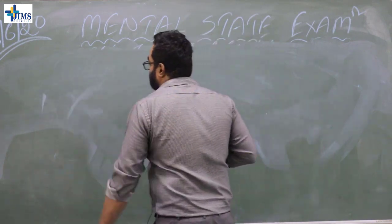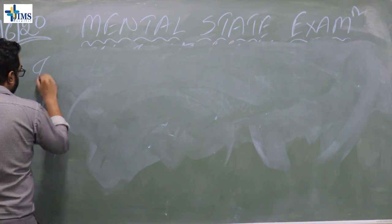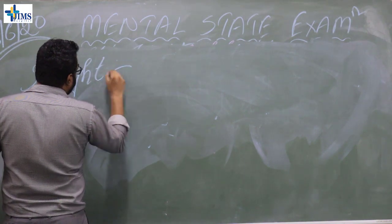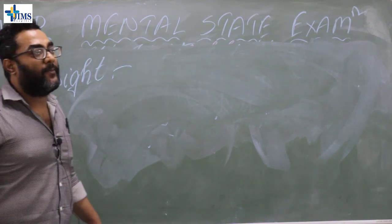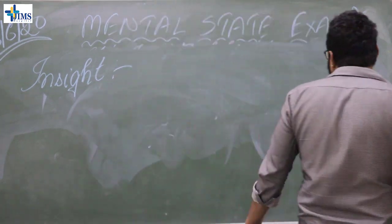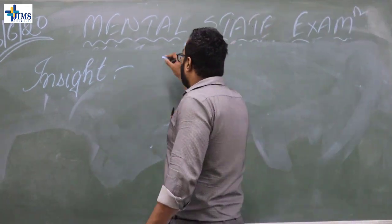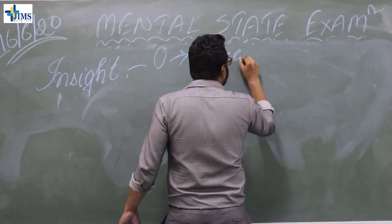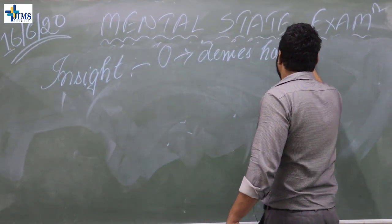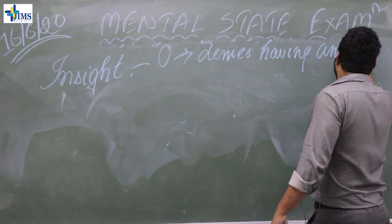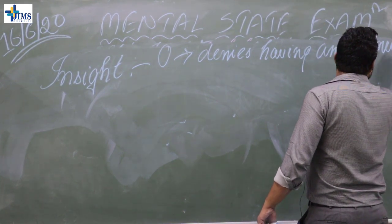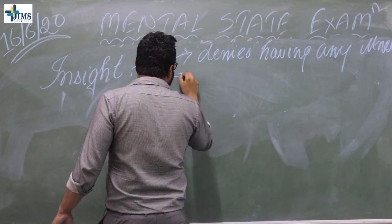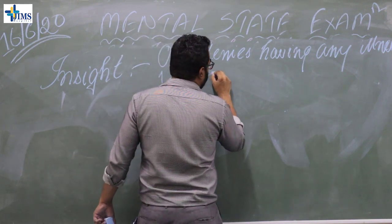Lastly, we assess the insight of the patient — how much the patient understands about their own illness. We classify insight from 0 to 5. When the patient has 0 insight, the patient completely denies having any illness. While insight level 1 means the patient accepts and denies at the same time.